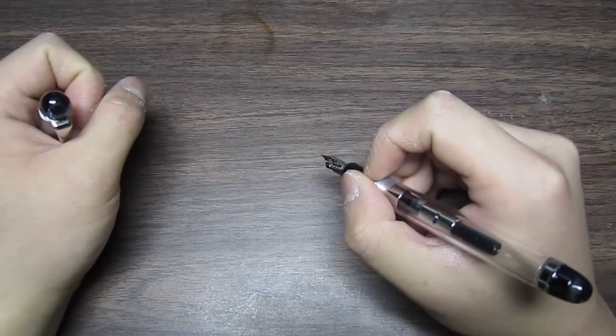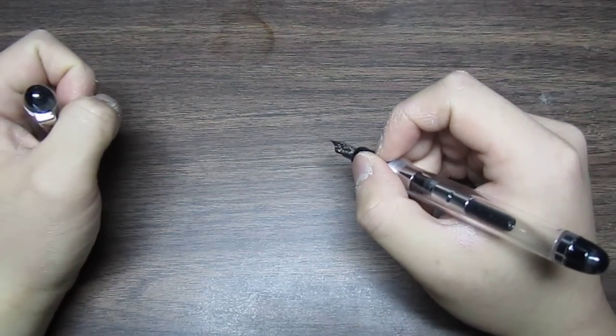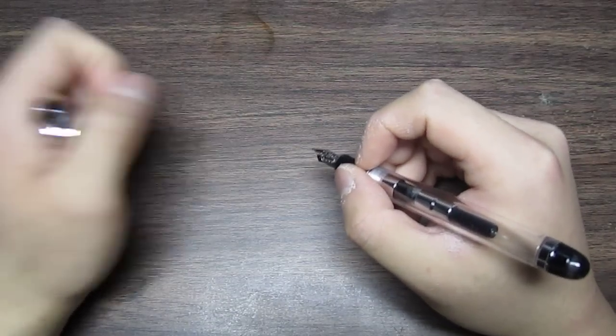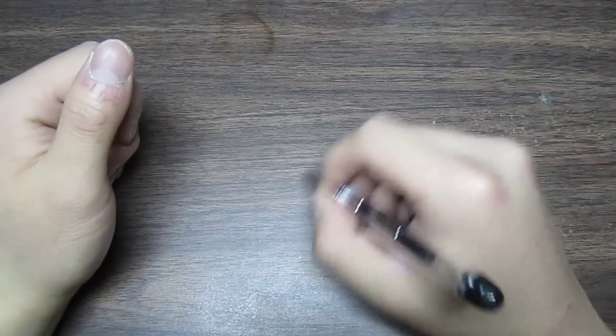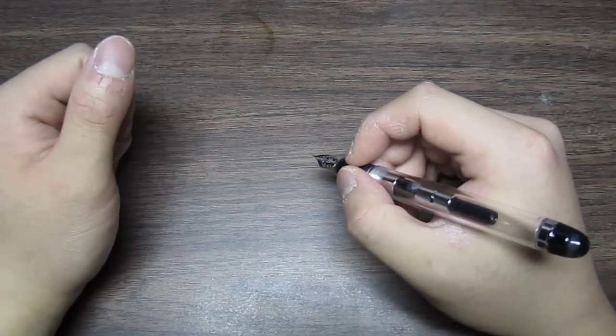Now, some pens are more forgiving than others. With some pens, you can put a lot of downward pressure and you won't really damage the nib, because generally stainless steel nibs, they're like nails. You can put a lot of downward pressure, you can use carbon paper with them, and you won't do any damage.